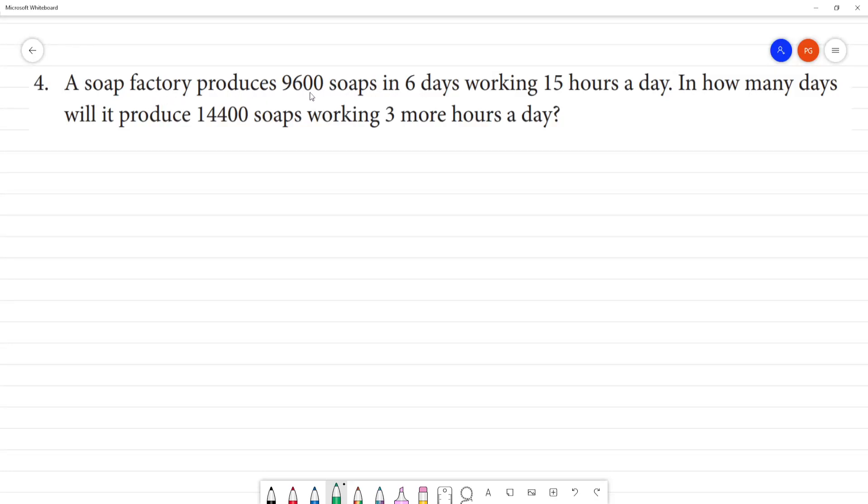A soap factory produces 9600 soaps in 6 days, working 15 hours. In how many days will it produce 14,400 soaps working 3 more hours a day?